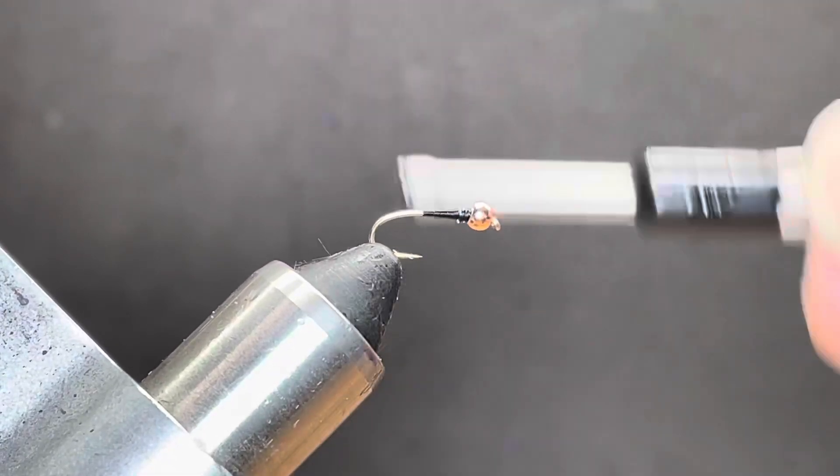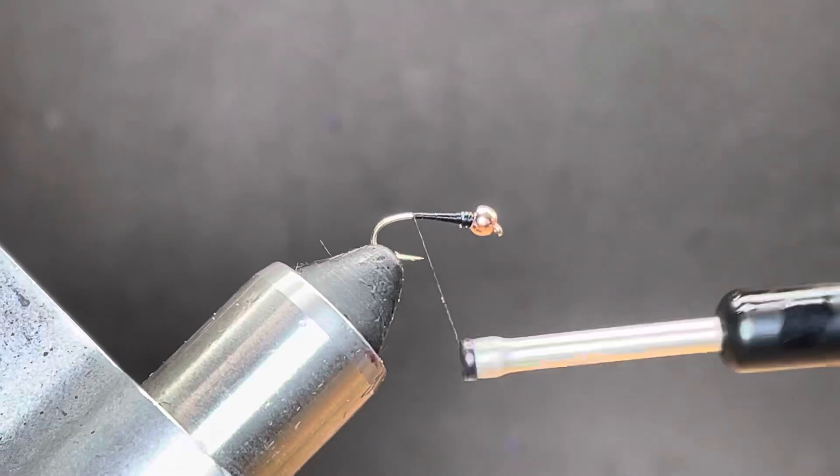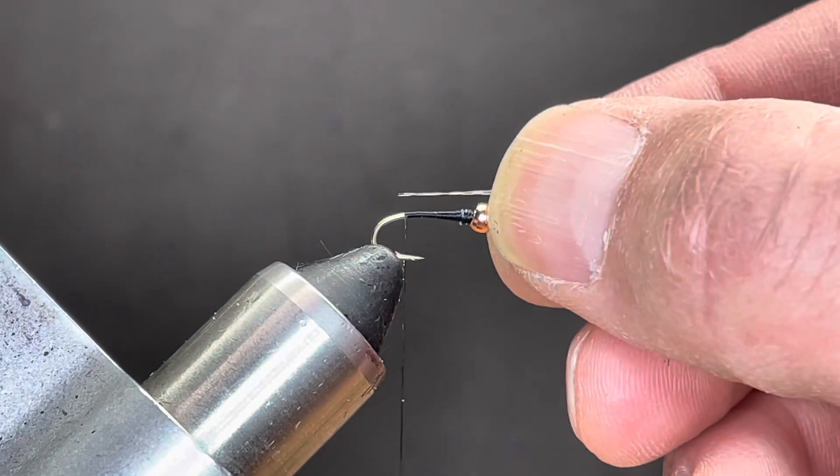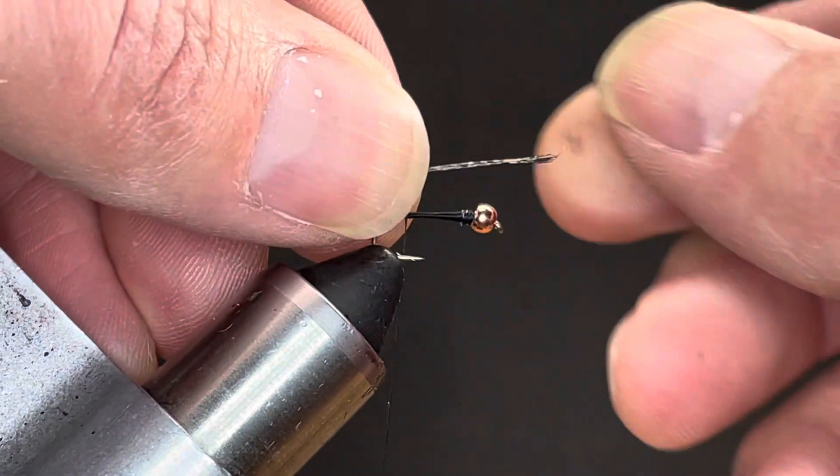There's just not much involved here. Keep this kind of thin. So, for the tail, we've got four strands of Coq de Leon.